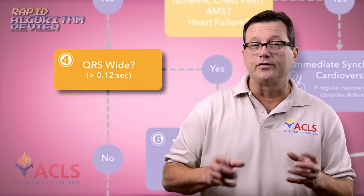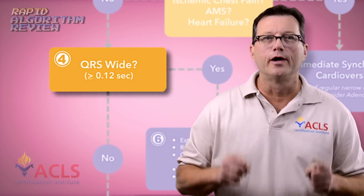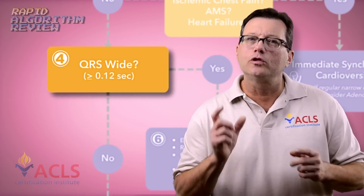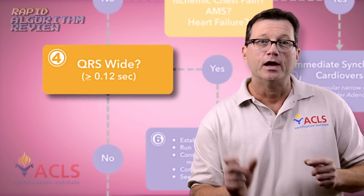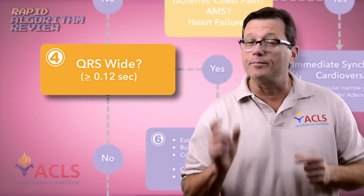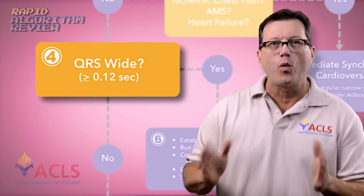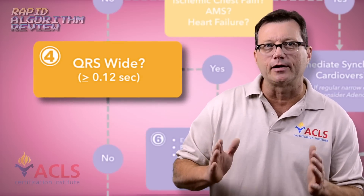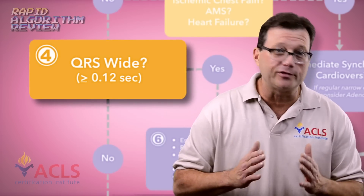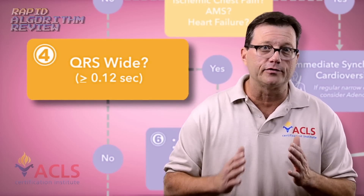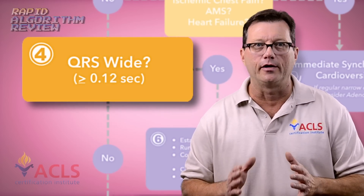Next, assess: is this tachycardia wide or narrow? We're looking at the width of the QRS. If it's greater than 0.12 seconds, we call this a wide complex tachycardia. If it's equal to or less than 0.12 seconds, it's a narrow complex tachycardia.